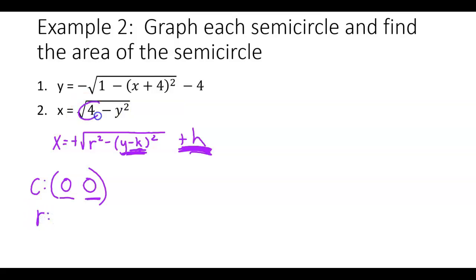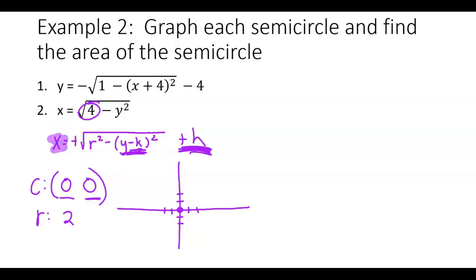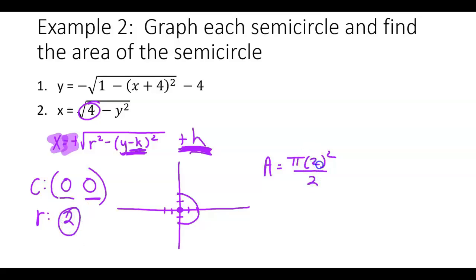Our radius: the square root of 4 is 2. The center is at the origin. Going up 2, right 2, left 2, and down 2. A full circle would look like that, but we have to remember this is actually a half circle. Since it's x equals, we're looking at right half or left half, and it's a positive — therefore it must be the right half of the circle. The area of a half circle is pi r squared over 2, my radius is 2, so pi times 4 over 2, which reduces to 2 pi.